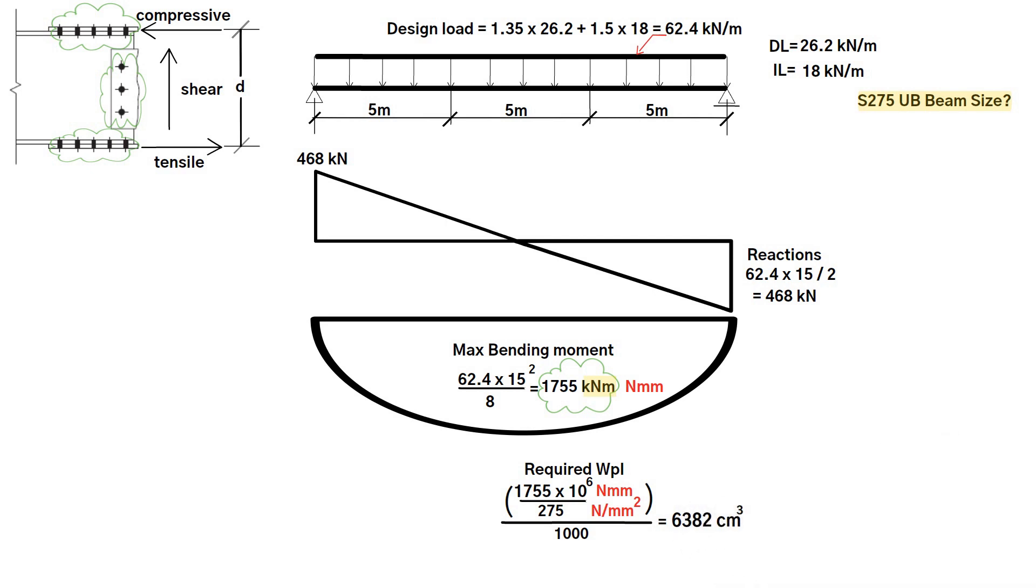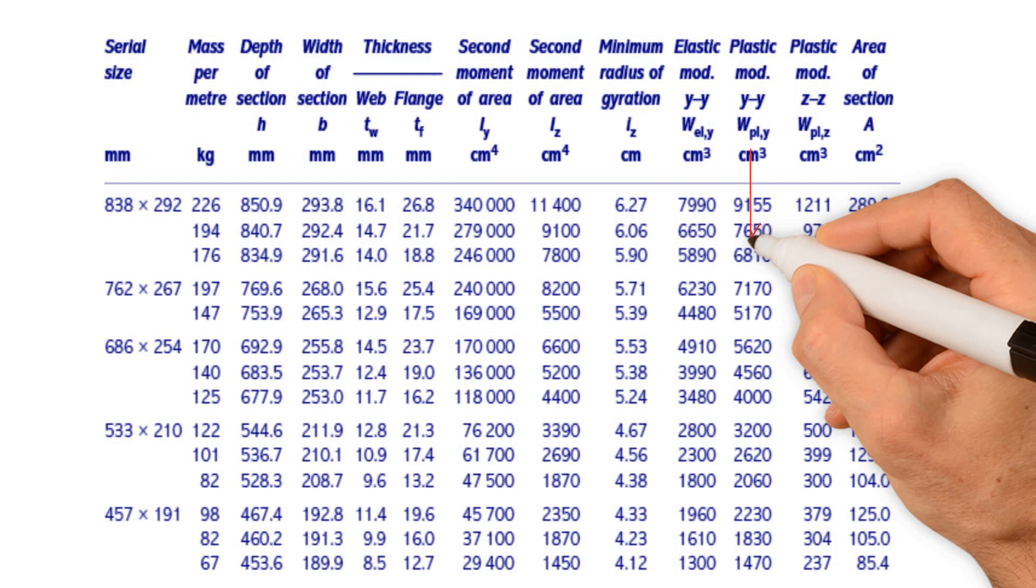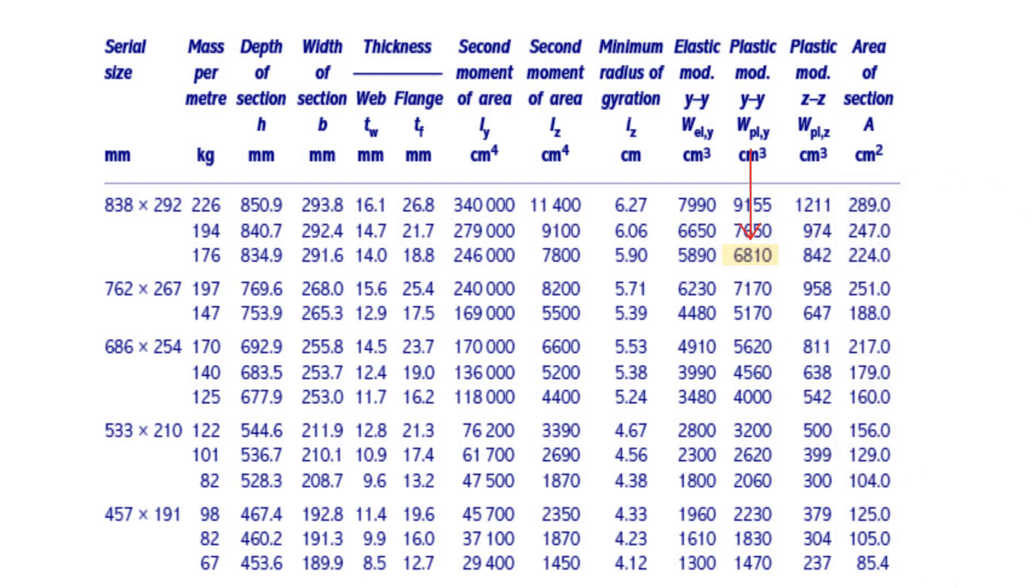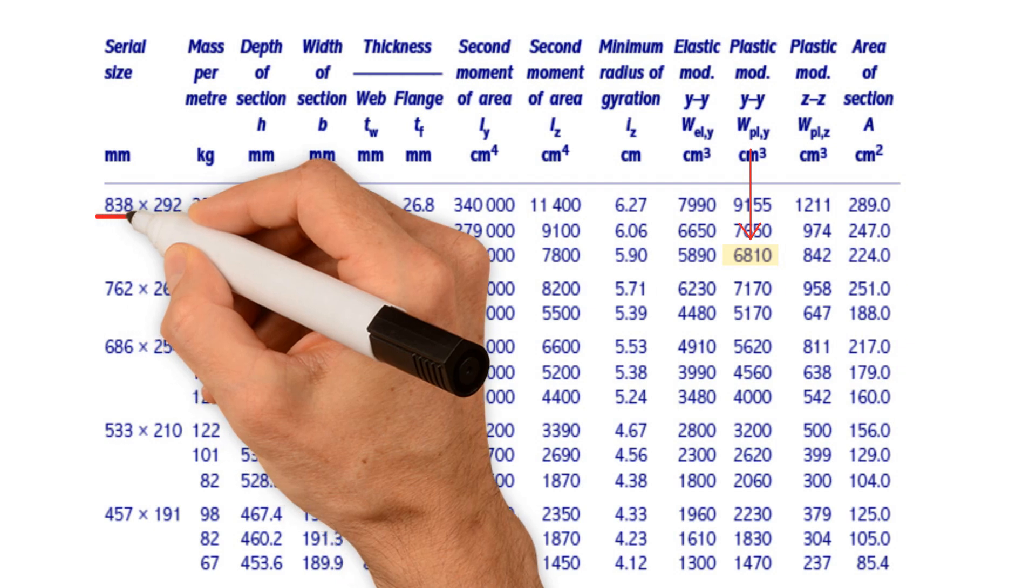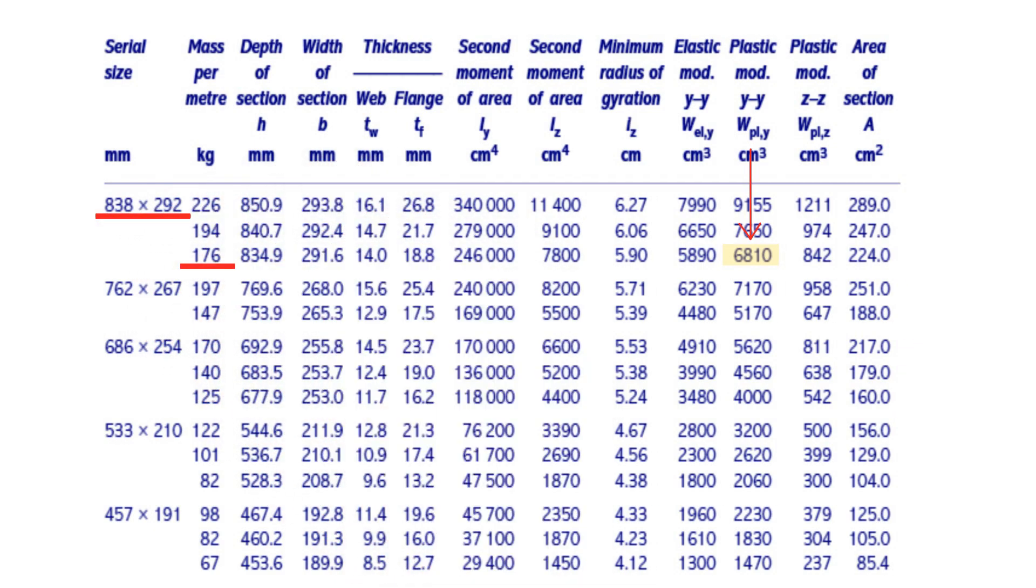Let's compare our result with the steel section properties table. We can clearly see that we need the amount 6810 centimeters cubed for our calculations. Therefore, the steel section required would be 838 times 292 times 176 kilogram per meter universal beam.